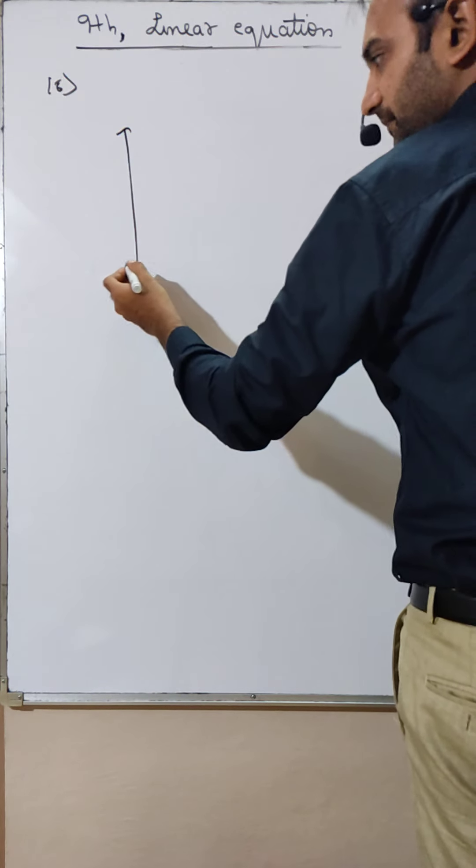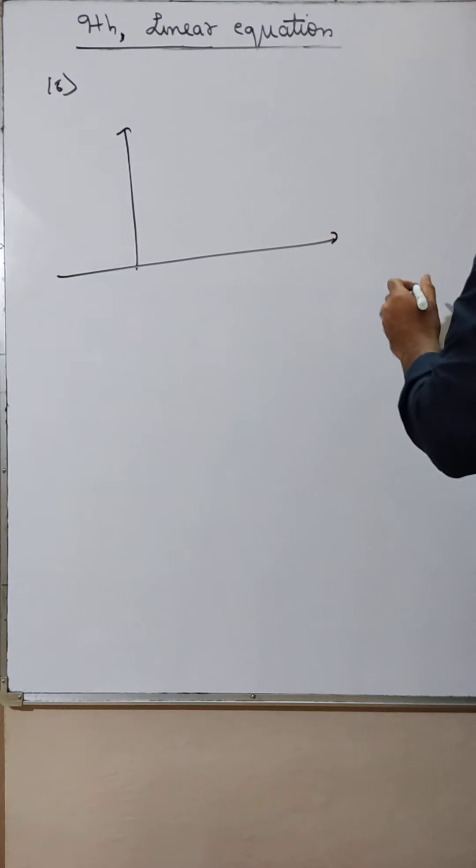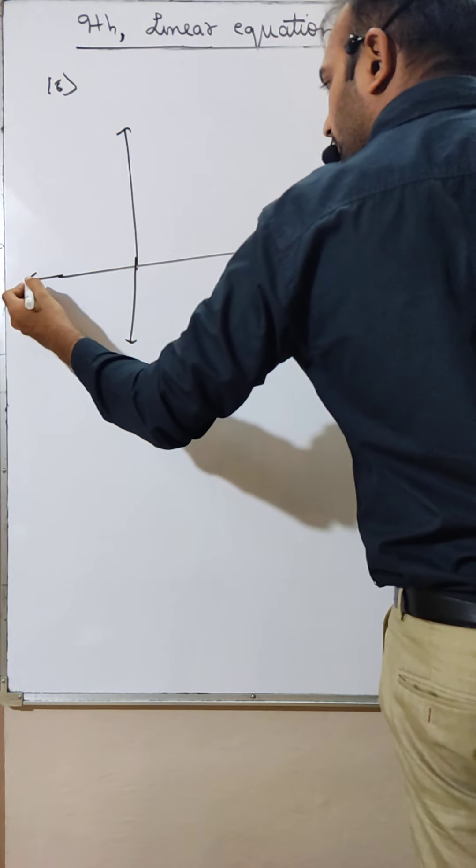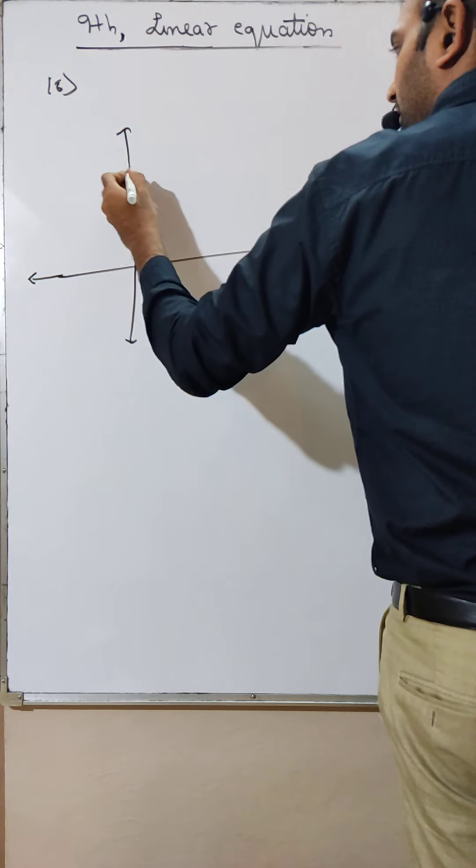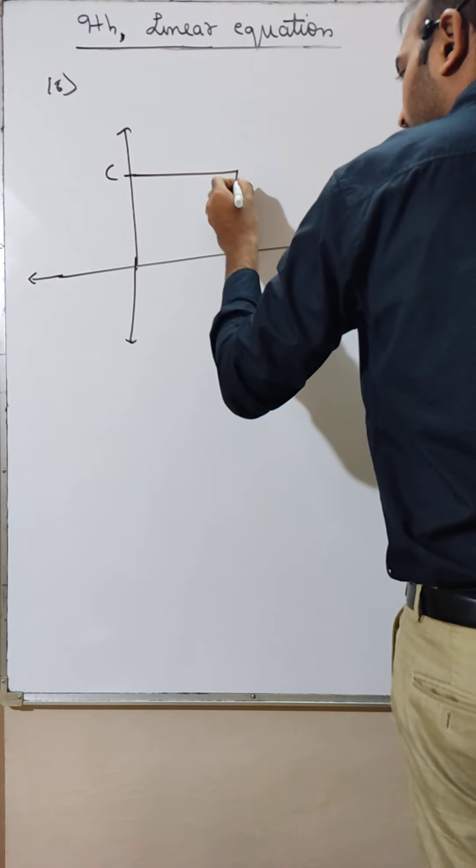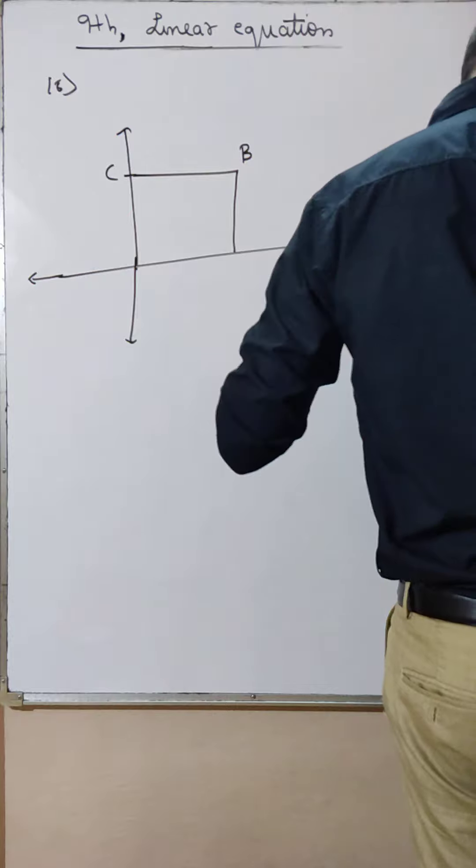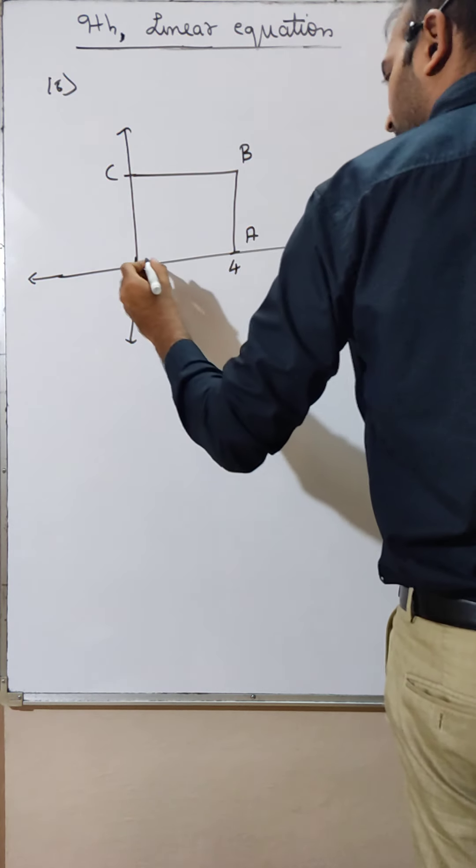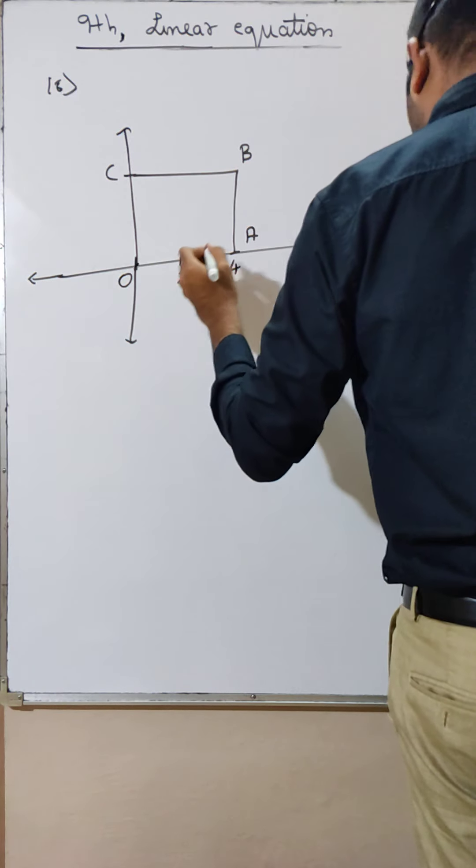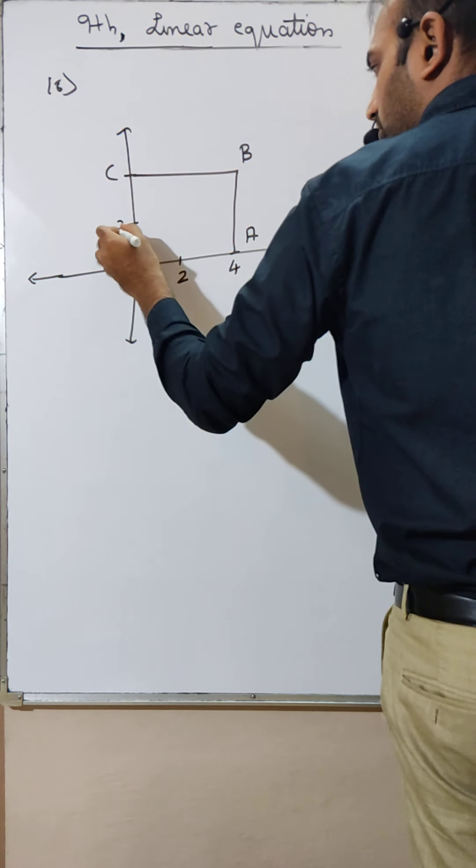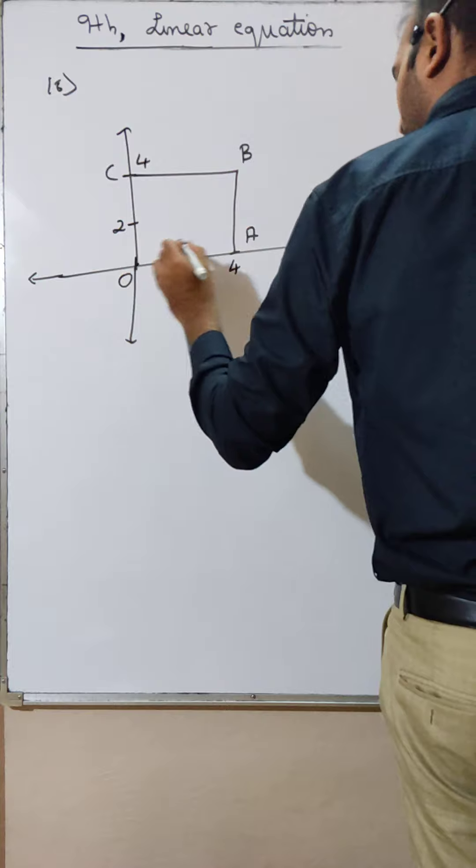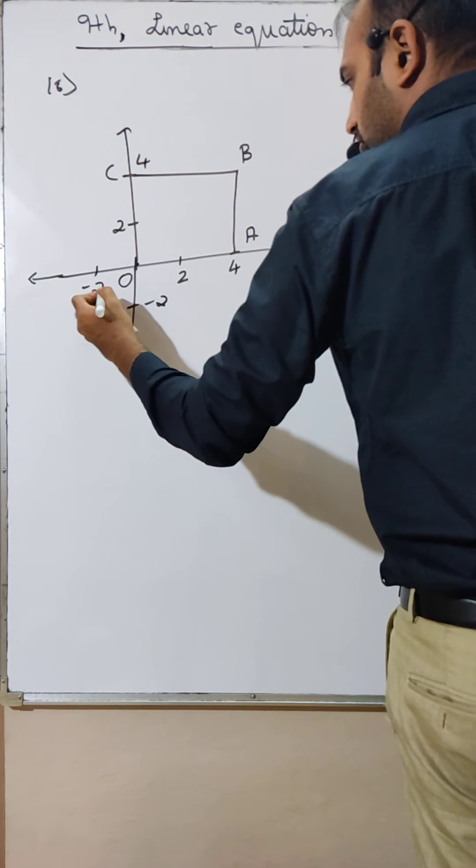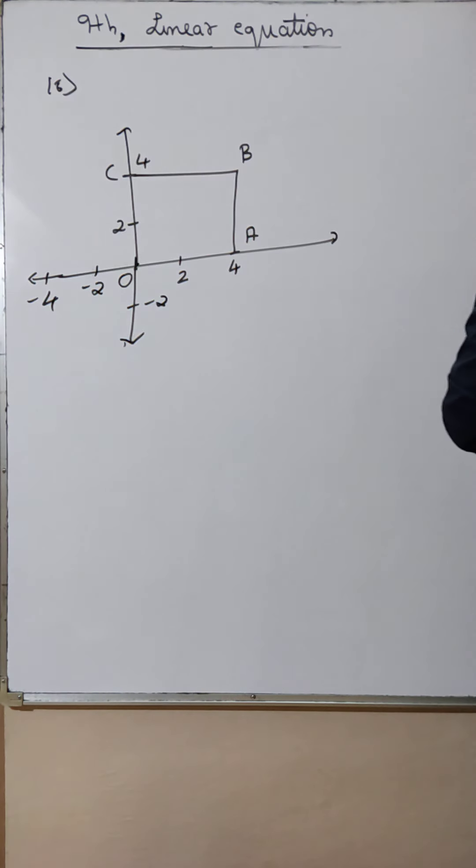They have given one graph like this. Yaha pe C hai, yaha pe B hai, yaha pe A hai and yaha pe 0 hai aur yaha pe 2 hai. And yaha pe bhi 2 hai, yaha pe bhi 4 hai. And then yaha pe minus 2 hai and yaha minus 2 hai, minus 4. This is what they have given in the question.